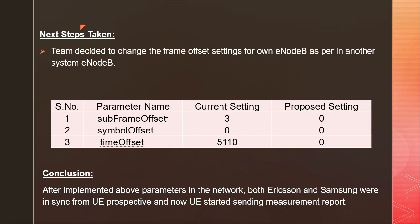The team changed these parameter values in the Ericsson system as per the Samsung system. These are the three parameters: subframe offset, which was currently 3 but in Samsung it was 0, so it is set to 0 now in Ericsson; symbol offset is now 0 in both; and time offset changed from 5110 to 0.